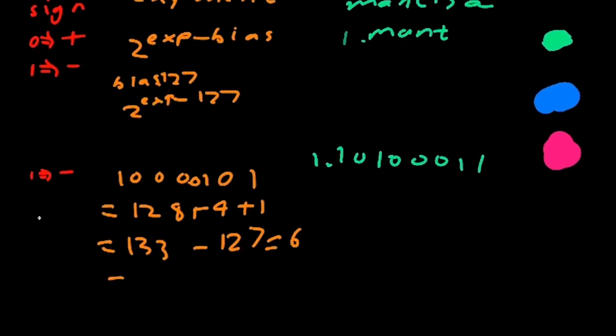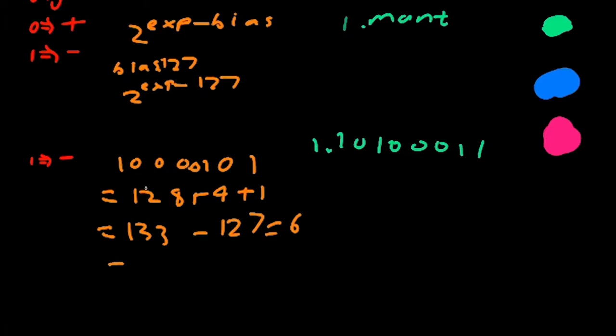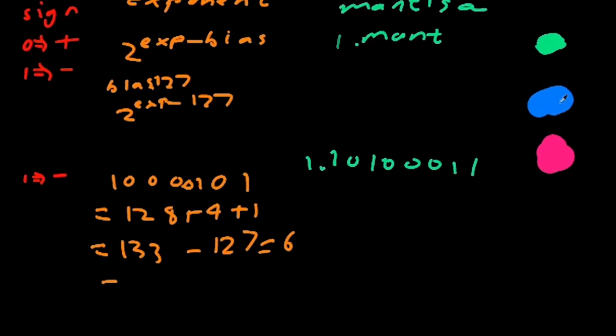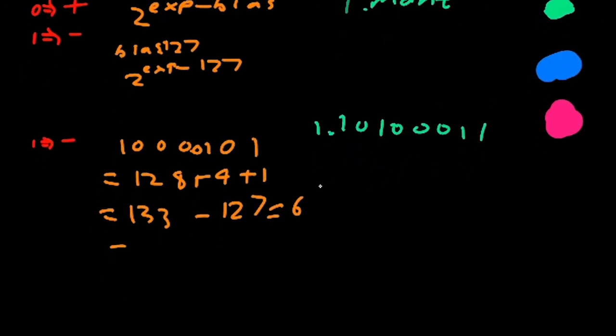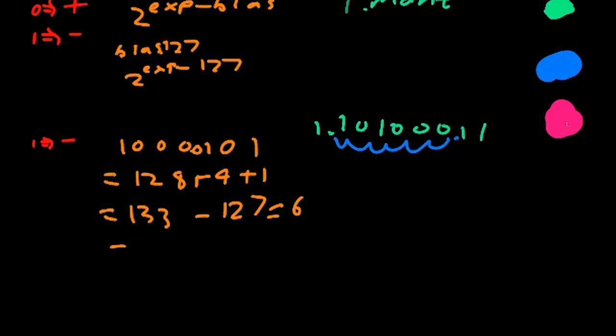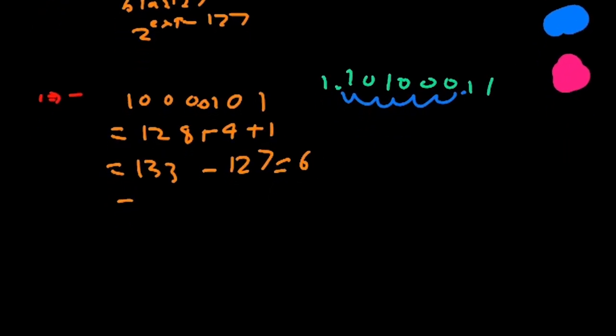Now we have our sign, exponent and mantissa. What we can do is instead of converting each part into decimal we can simplify it and then convert it to decimal. Now because our exponent is in base 2 we can move this decimal point by the exponent six places from here which means we can ignore this exponent now because we already applied it.